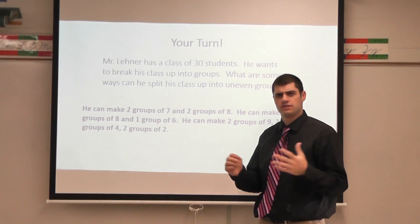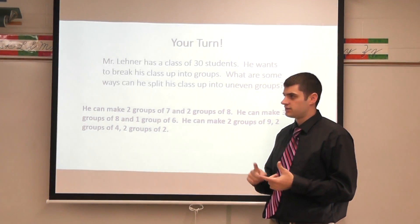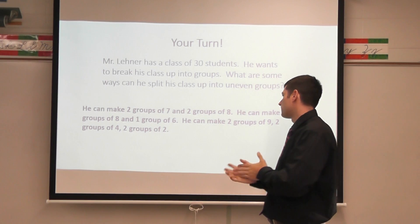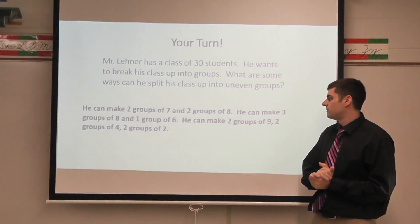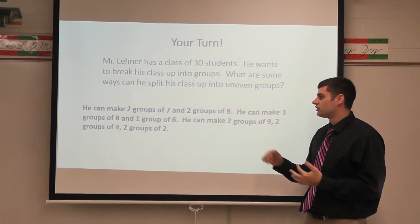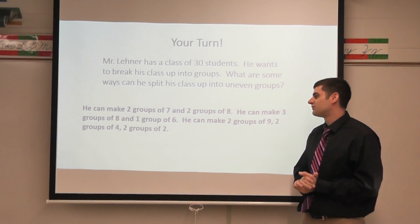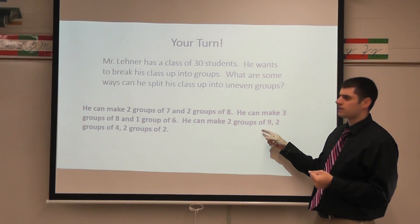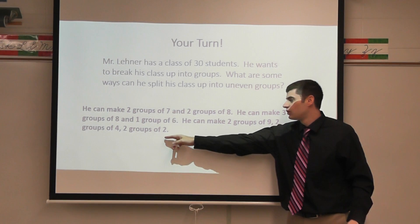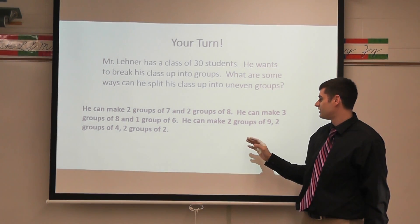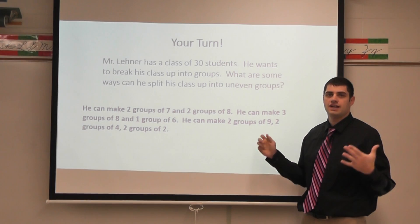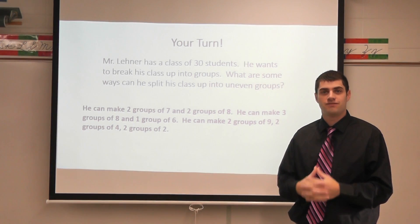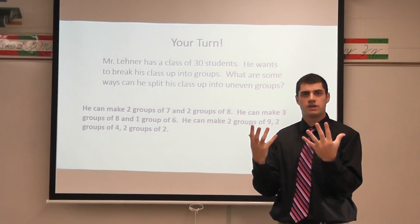I can also make three groups of eight — using multiples: 8, 16, 24 — and one group of six. Adding six to 24 becomes 30. And then I can also make two groups of nine — nine and nine is 18 — two groups of four — four and four is eight — and two groups of two — two and two is four. Adding those up: 18 plus 4 is 22, plus 8 is 30. You may have had some different ones at home, which is perfectly fine. We're utilizing factors, divisors, and multiples all together.